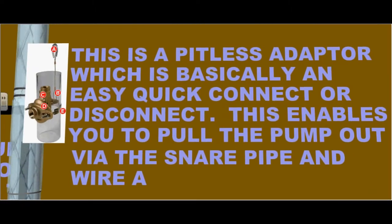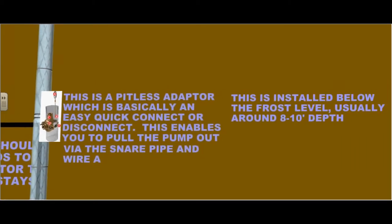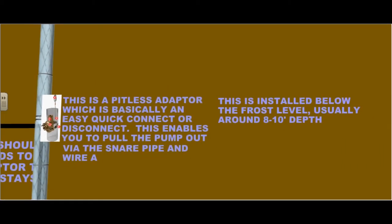This is a pitless adapter, which is basically an easy quick connect or disconnect. This enables you to pull the pump out via the suction pipe and wire assembly. This is installed below the frost level, usually around 8 to 10 feet in depth.